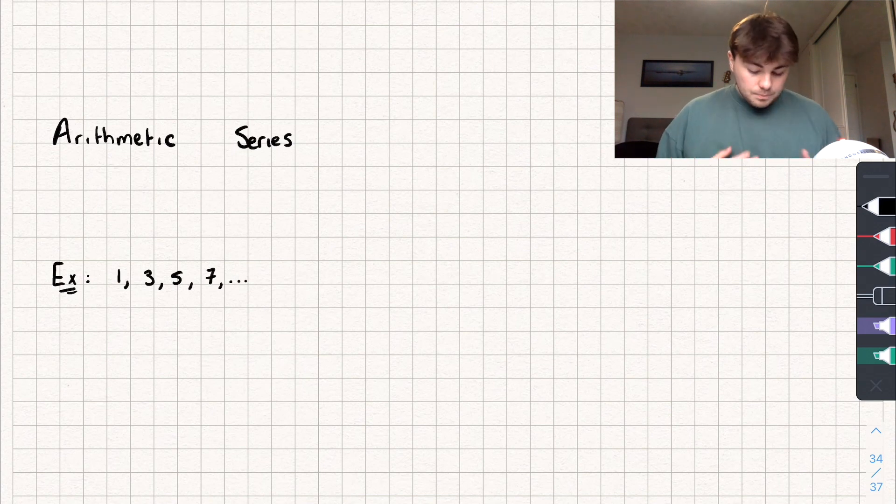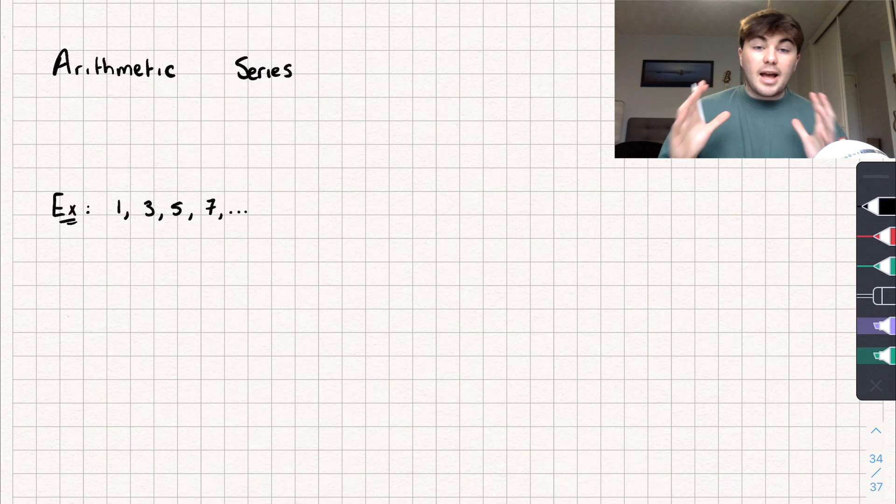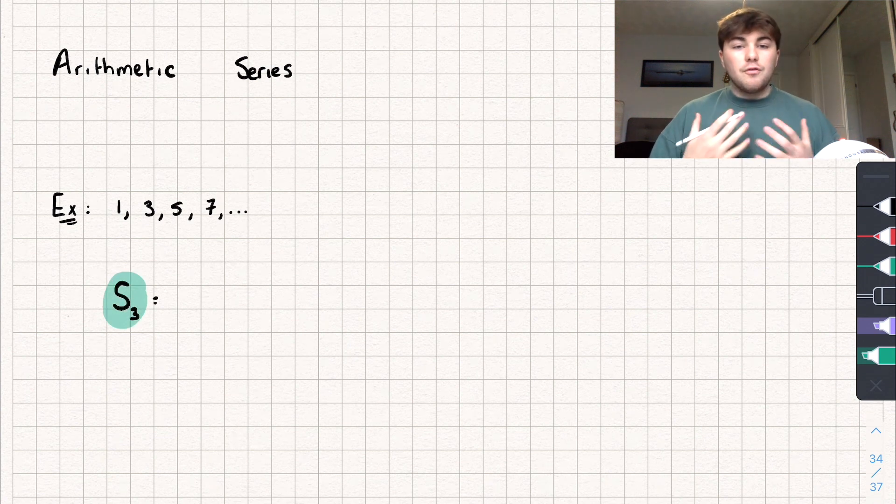So in the series, we could find the sum of say the first three terms and I'm going to introduce you to some notation that you will use. We use a capital S like this with a subscript which is just a small number next to it. So in the sum of the first three numbers, so S₃, we use this here to indicate that we want the sum of the first three numbers in the sequence.